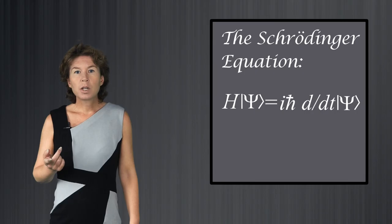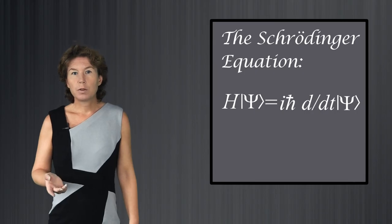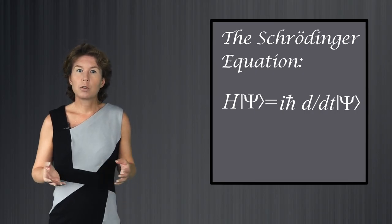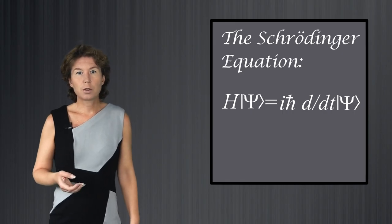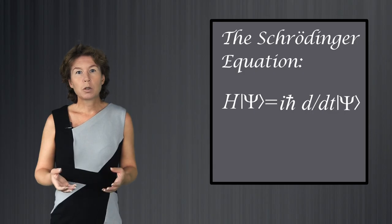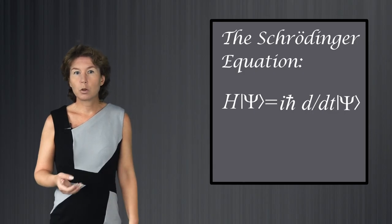First, as long as you do not measure the wave function, it changes according to the Schrödinger equation. The Schrödinger equation is different for different particles, but its most important properties are independent of the particle. One of the important properties of the Schrödinger equation is that it guarantees that the probabilities computed from the wave function will always add up to 1, as they should.